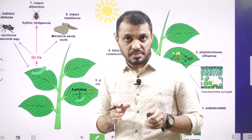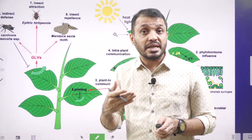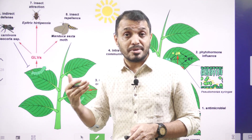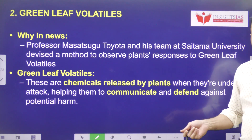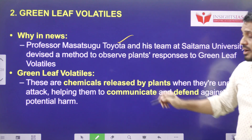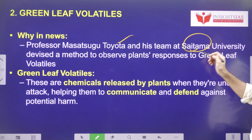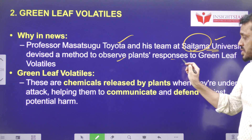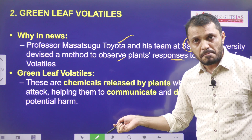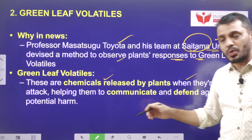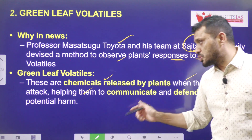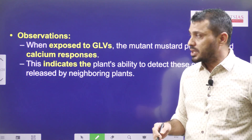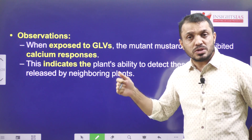Recently, scientists did research on genetically modified mustard to study how it responds to green leaf volatiles and the changes happening in these plants. Professor Masatsugu Toyota and his team at Saitama University in Japan devised methods to observe plant responses to green leaf volatiles. Green leaf volatiles are chemicals released by plants when under attack, helping plants communicate and defend against potential harm.